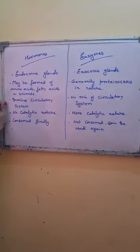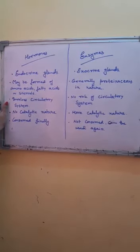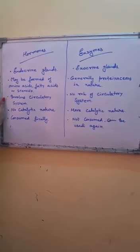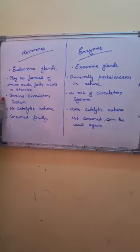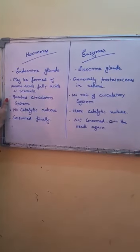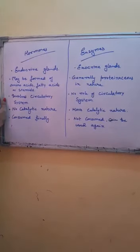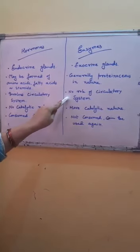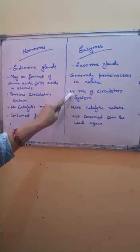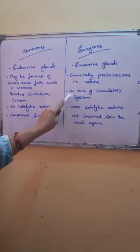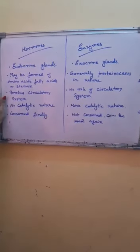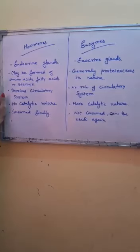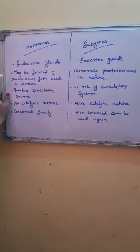The third difference: hormones involve the circulatory system for their movement. Since they are produced by ductless endocrine glands, they are released directly into blood, which is part of the circulatory system. Enzymes, on the other hand, have their specific ducts, so there is no role of the circulatory system in the movement of enzymes. Also, since hormones act away from the site of synthesis, they need the circulatory system to travel, whereas the glands producing enzymes are generally found near the site of action.